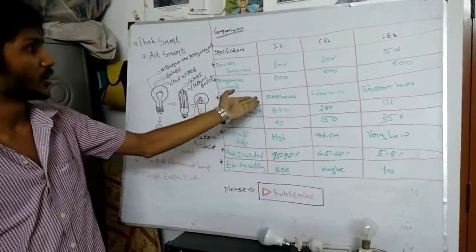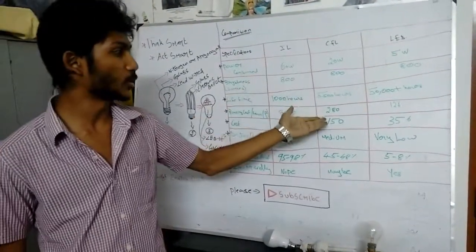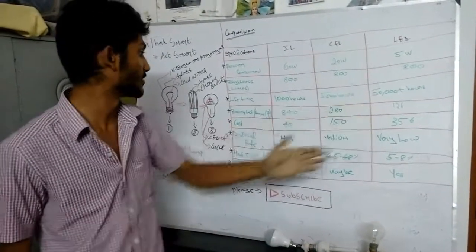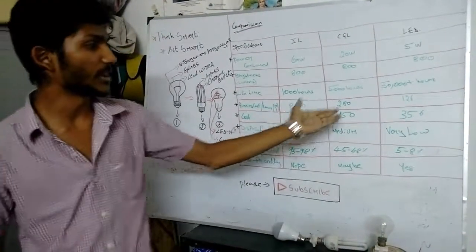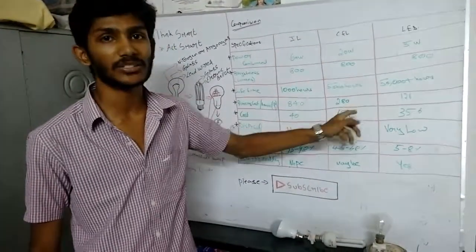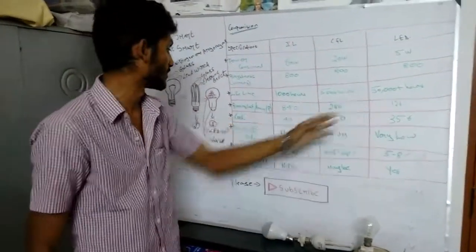Running cost: The running cost per annum or per month we can consider as 840 rupees, CFL 280 rupees, LED 156 rupees. The cost of the lamps is 40, 150, 356. Only the cost of the LED or CFL is high but the consumption cost is so less.